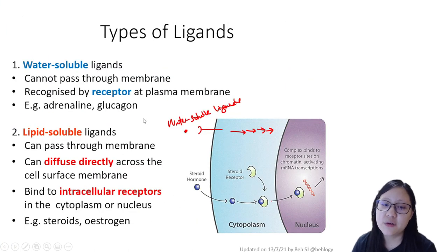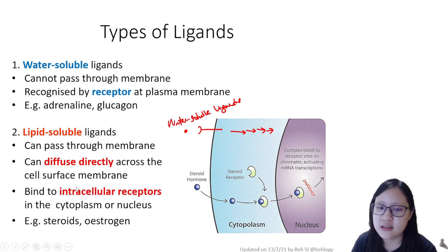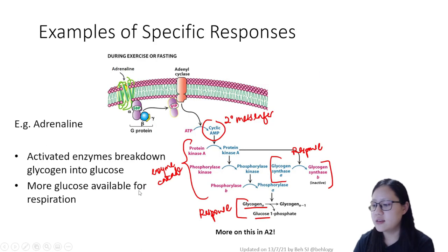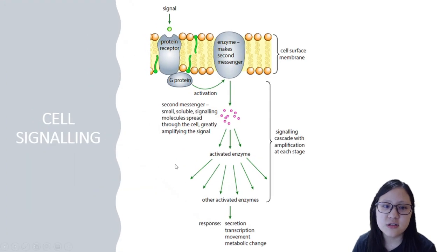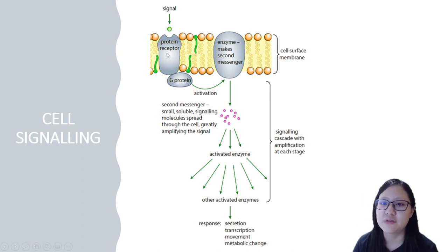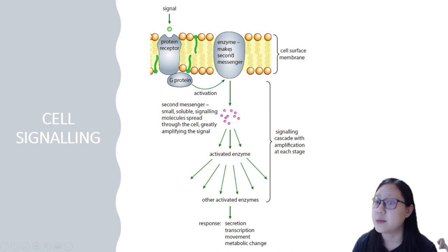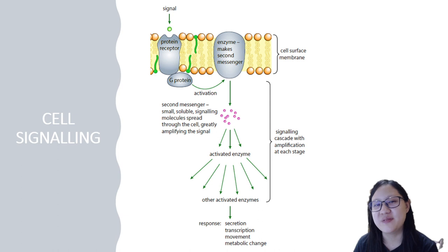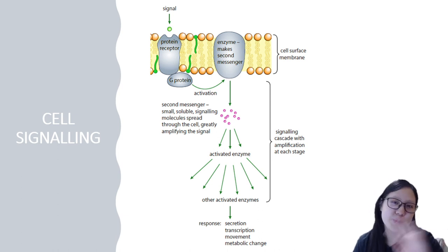Examples of lipid-soluble ligands include steroids and estrogen. Don't worry too much about lipid-soluble ligands just yet — it's almost the same process except the ligand can diffuse through the membrane. Focus on the water-soluble ligands. To summarize cell signaling: a ligand binds to a receptor, activating a G protein, which produces second messengers, triggering a signaling cascade that results in a specific response. That's the complete summary of the cell signaling process — hope you learned something today!